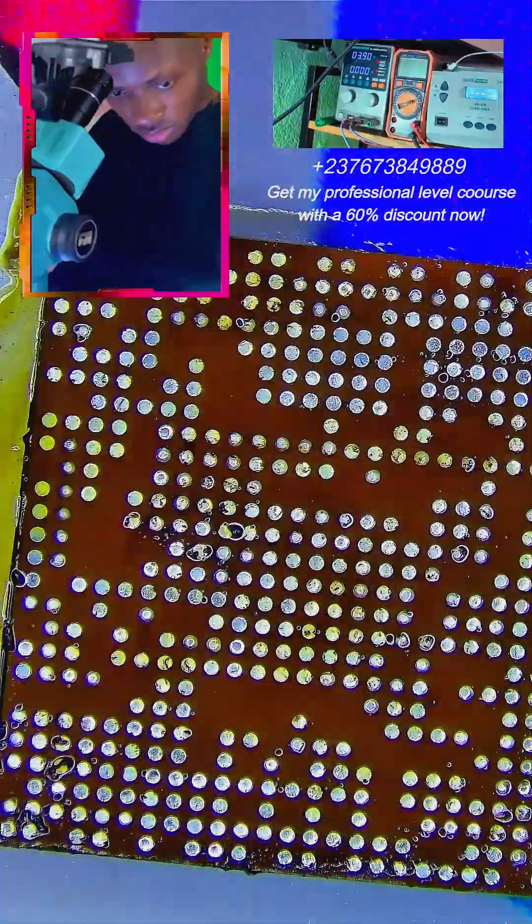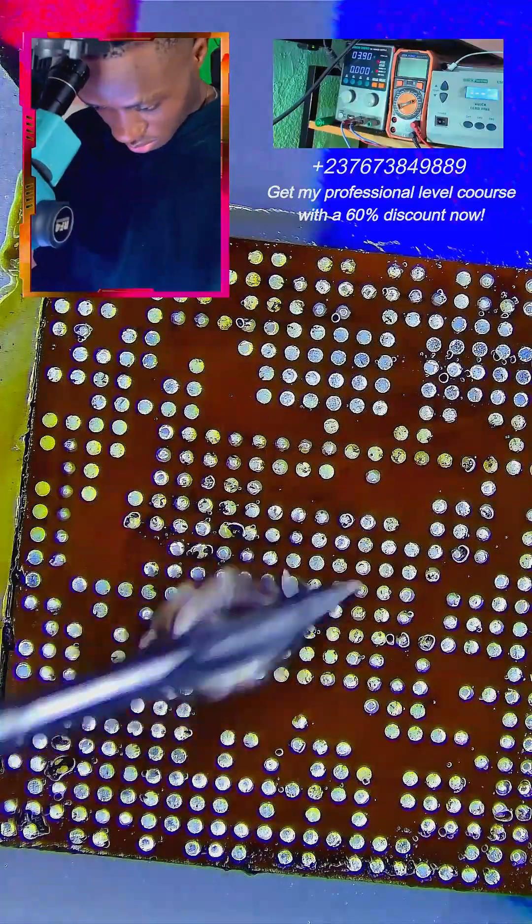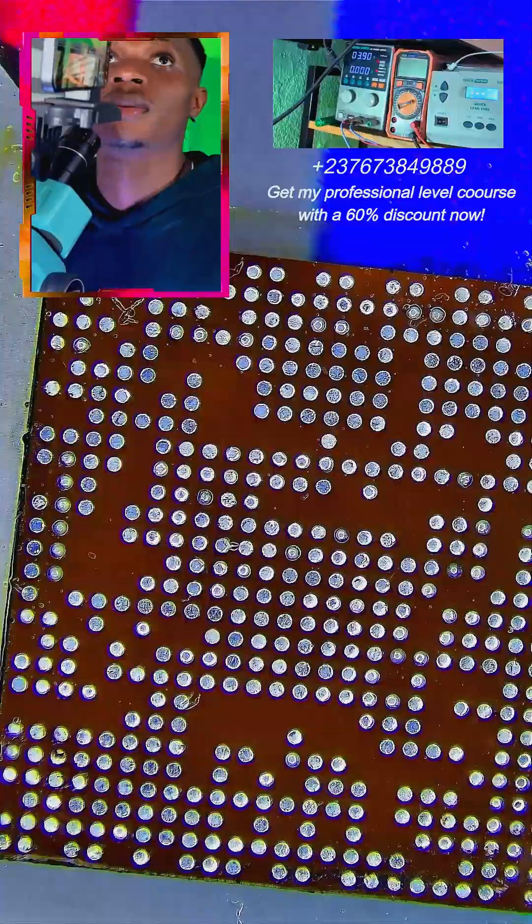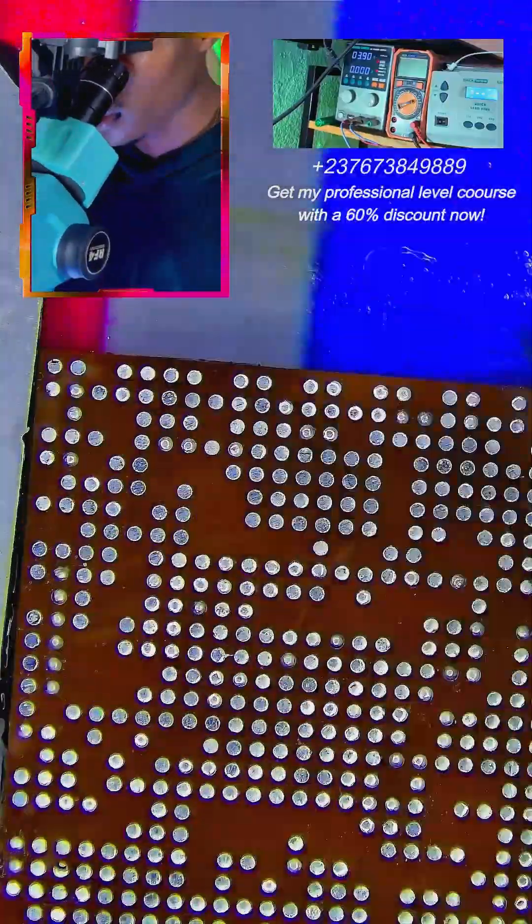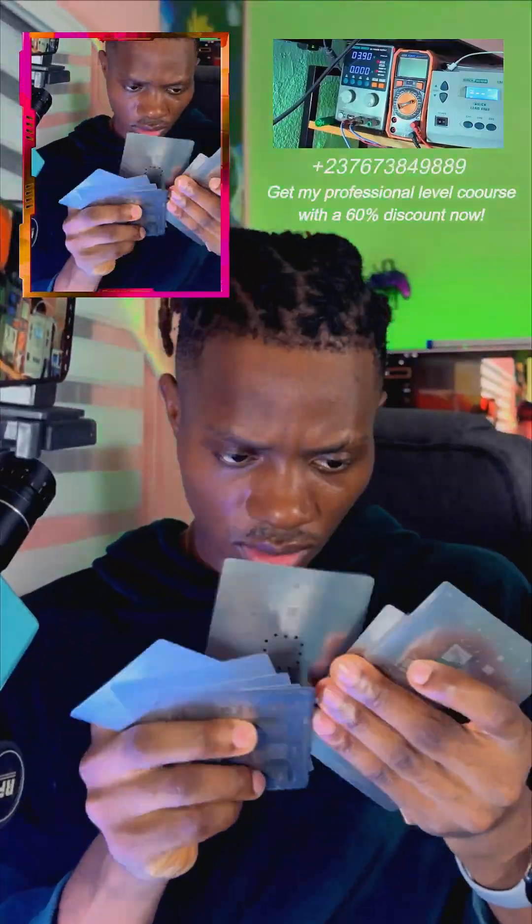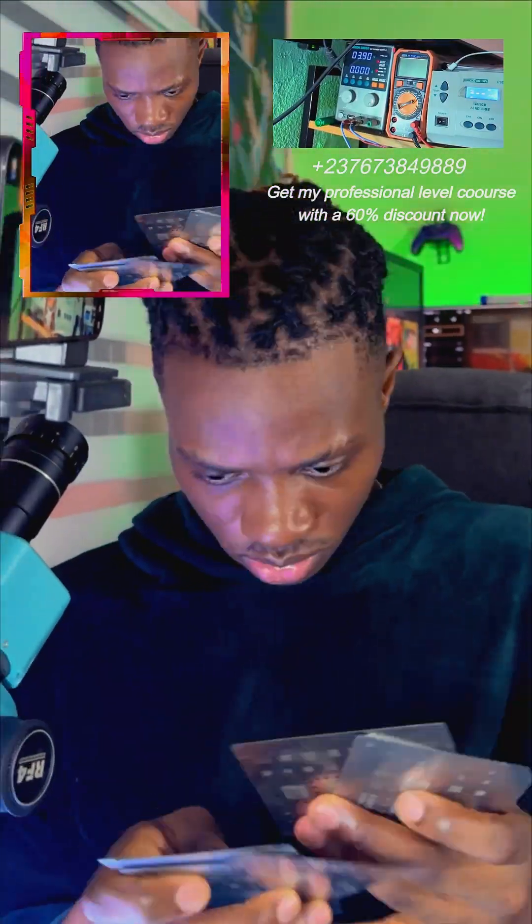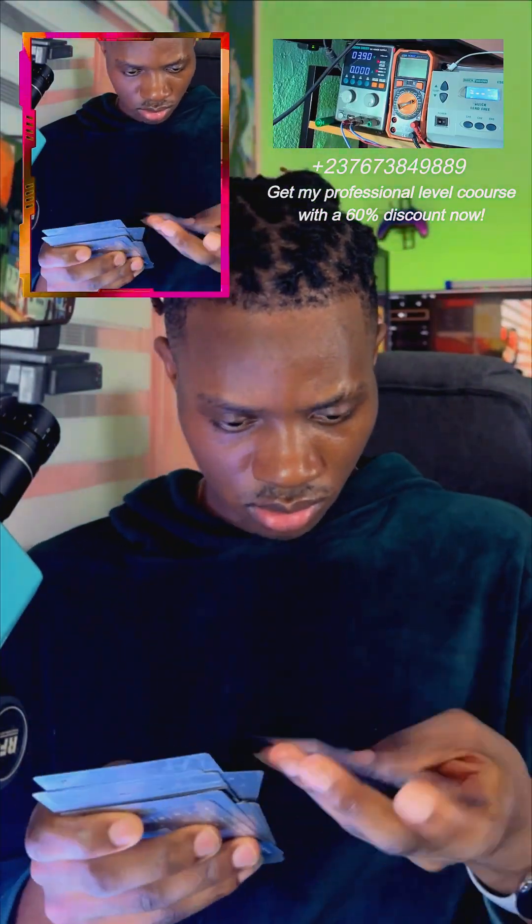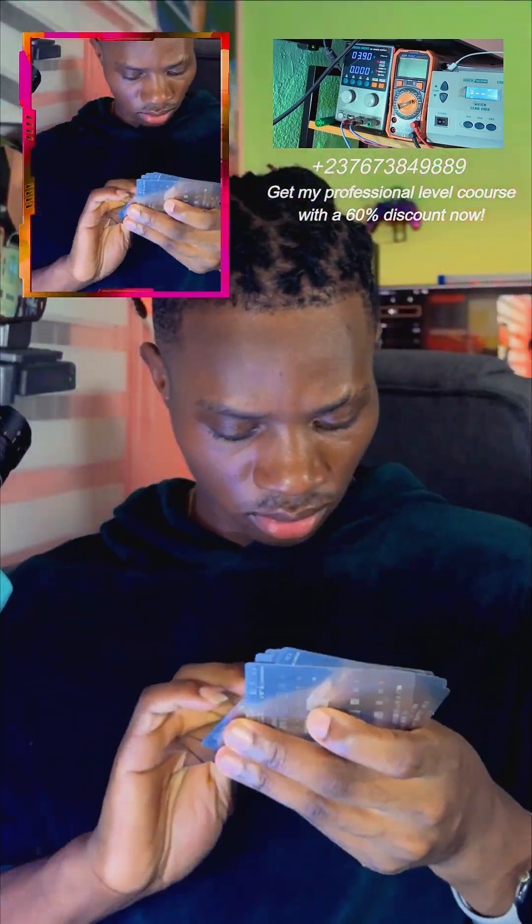You can see this CPU and we are going to use the universal stencils. A lot of people are not even able to reball smaller ICs with the universal stencil, so I have a video about that. You can watch this video and you will also learn something from here. So as you can see, I was looking for a stencil but I don't have any dedicated stencil for that CPU, so I had no option but to use the universal stencil.